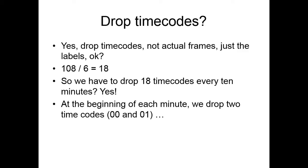Well, you see, at the beginning of each minute, in that second, the first second of the minute, we drop two labels, two time codes, 00 and 01. Remember, we are not dropping the actual frames. Only the labels. But the problem is, if we drop two frames out of every minute, in 10 minutes, we are dropping 20 frames, and we need to drop only 18 time codes. We are dropping two time codes too many.